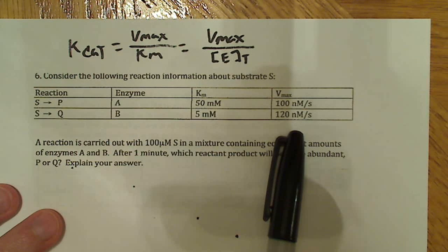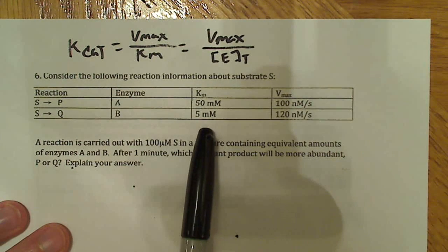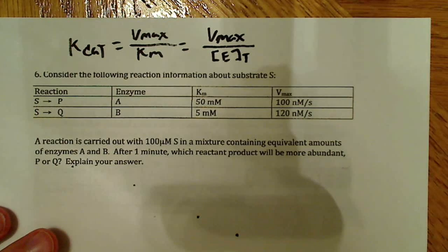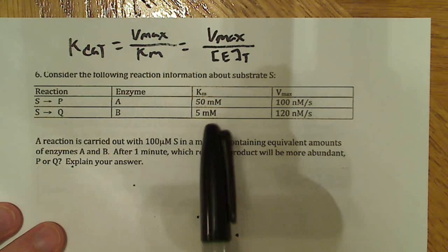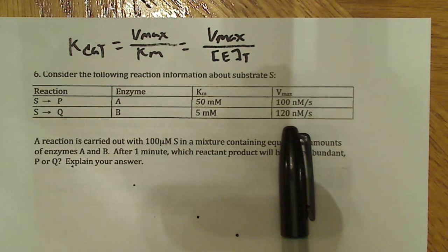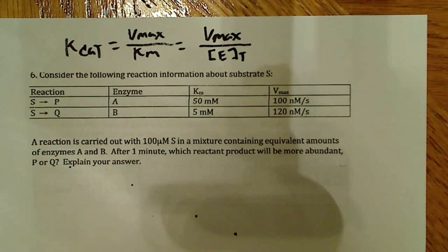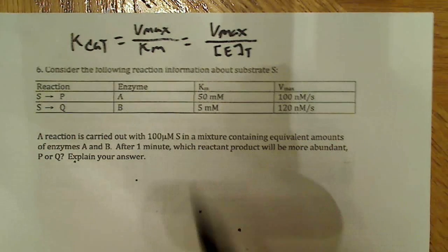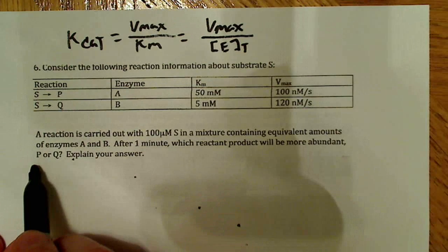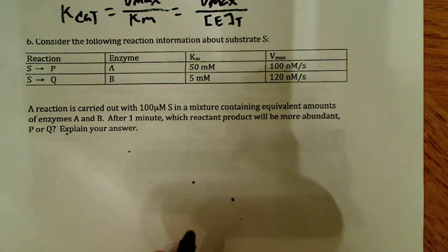Km is the substrate concentration at half Vmax — a measure of how fast the enzyme approaches Vmax. If I have a lower Km, that means I'm approaching Vmax much faster, so enzyme B is operating more efficiently. And then the Vmax is also higher for enzyme B, which suggests it's operating more efficiently than enzyme A. So intuitively, I'm already thinking we'll wind up with more Q than P.